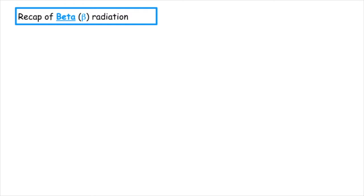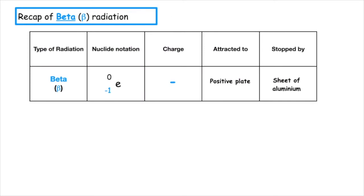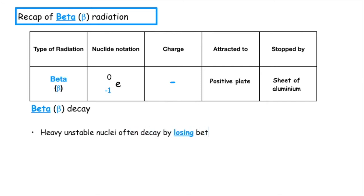First, we have to have a little recap about beta radiation. Beta radiation is a high energy electron, which has the nuclear notation minus one, zero. It has a charge of negative one, and when passed through an electric field, would be attracted to the positive plate. It can be stopped by a sheet of aluminium. Beta decay happens when we have heavy unstable nuclei, and they often decay by losing beta particles.